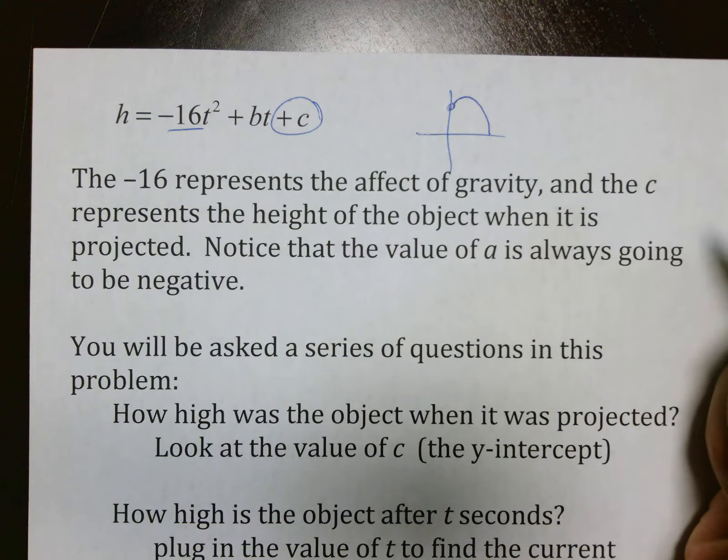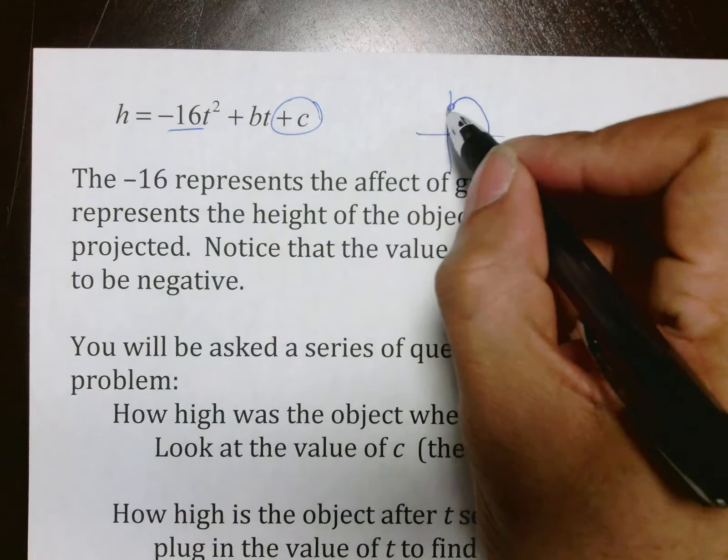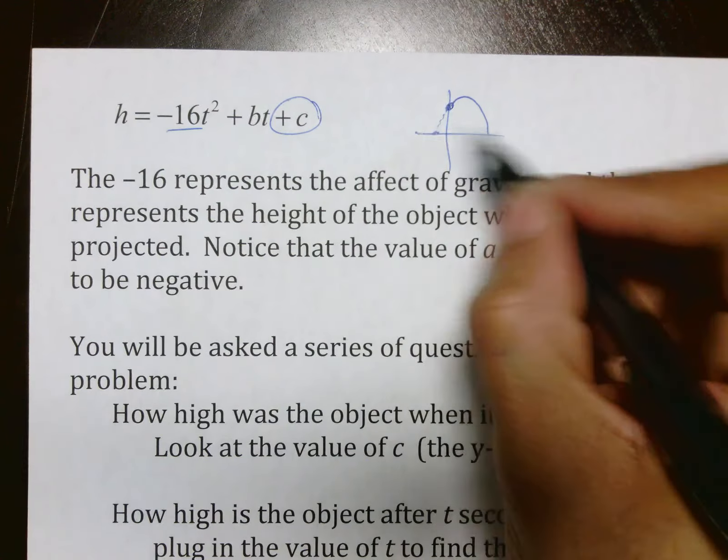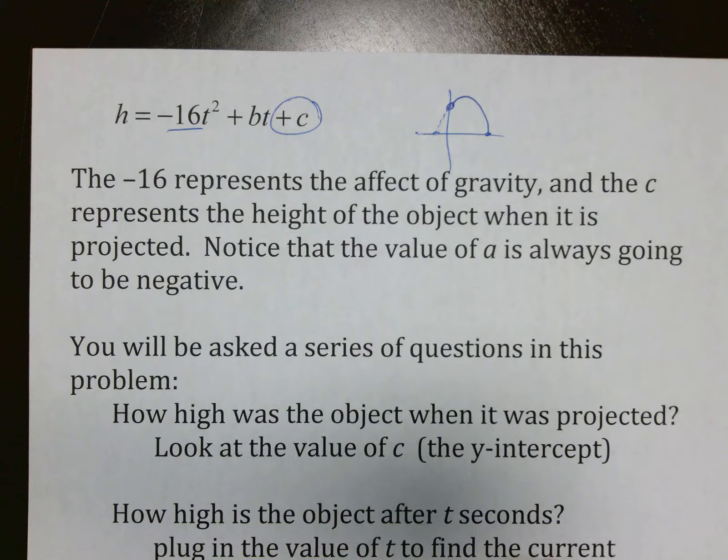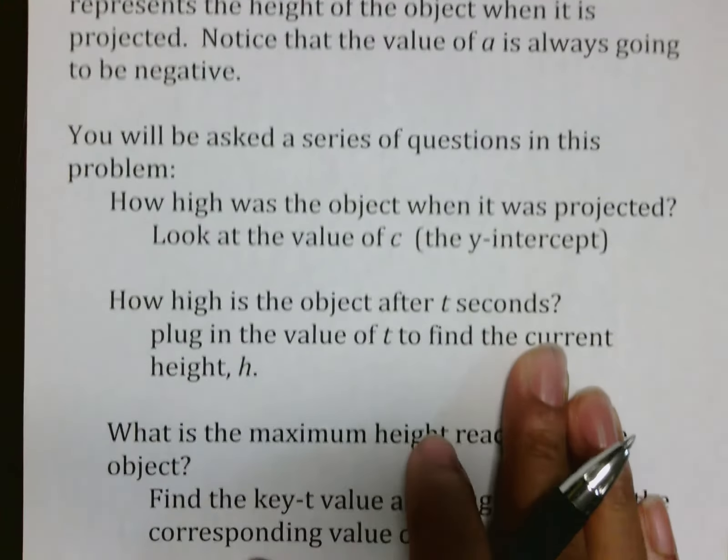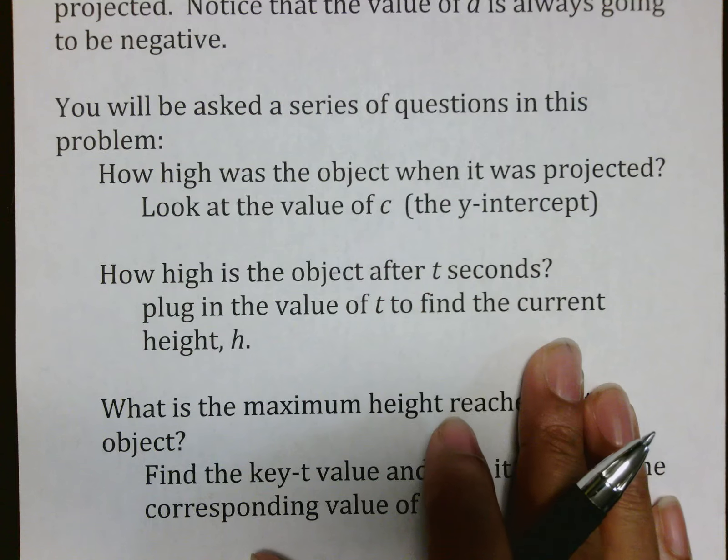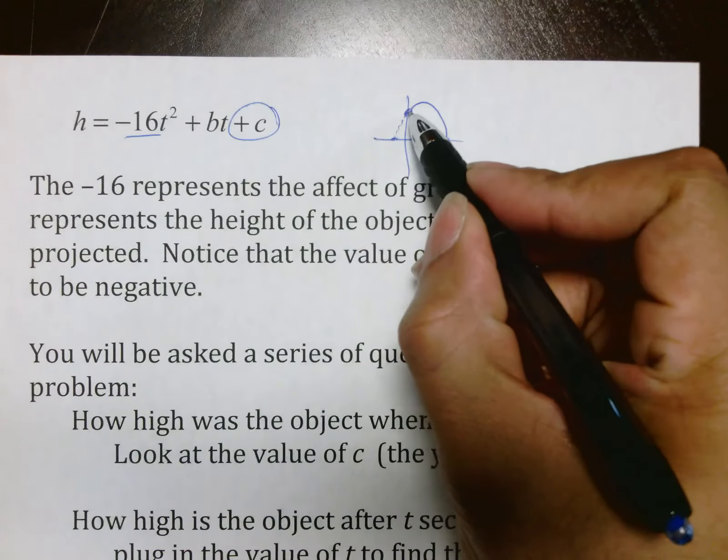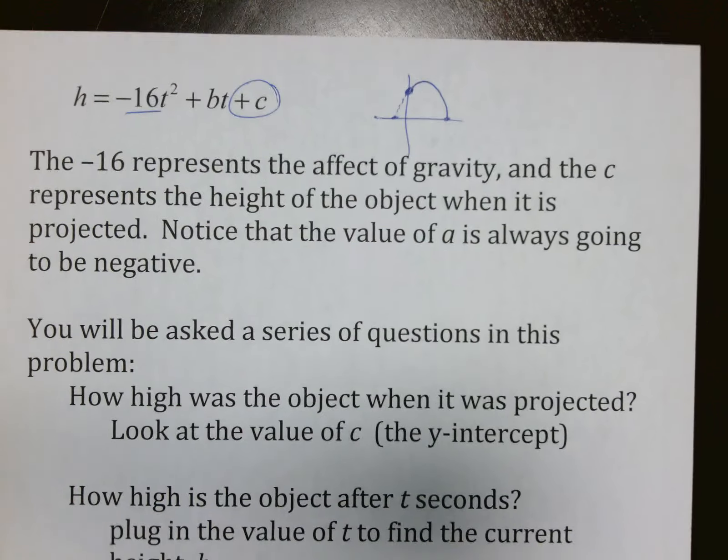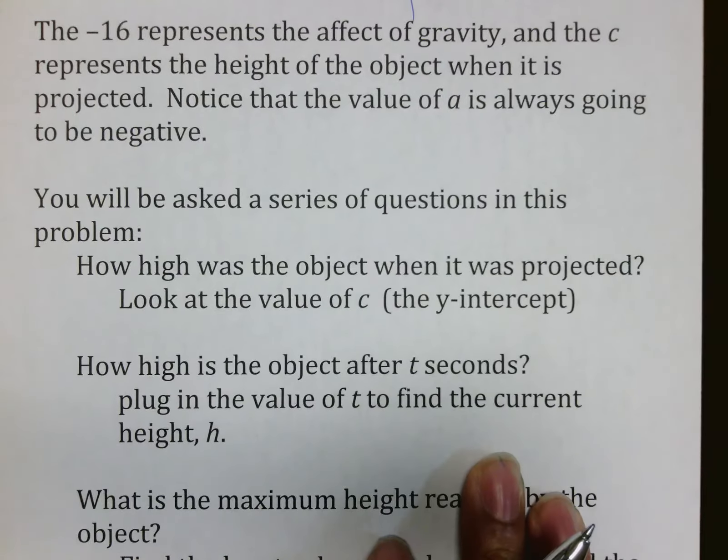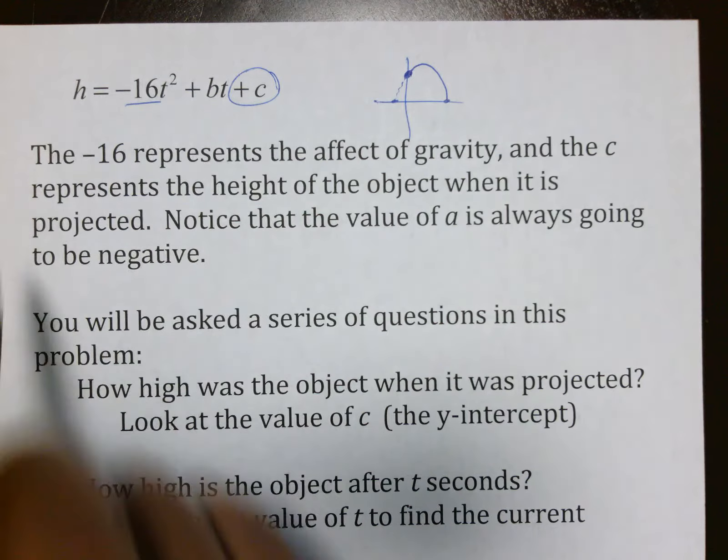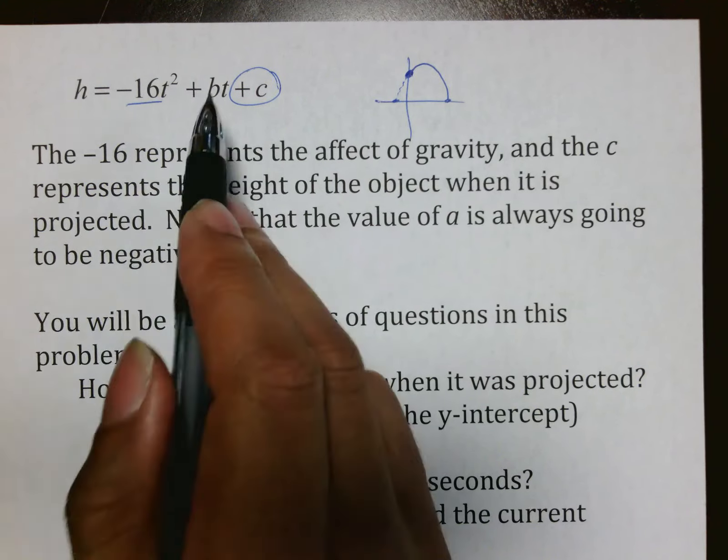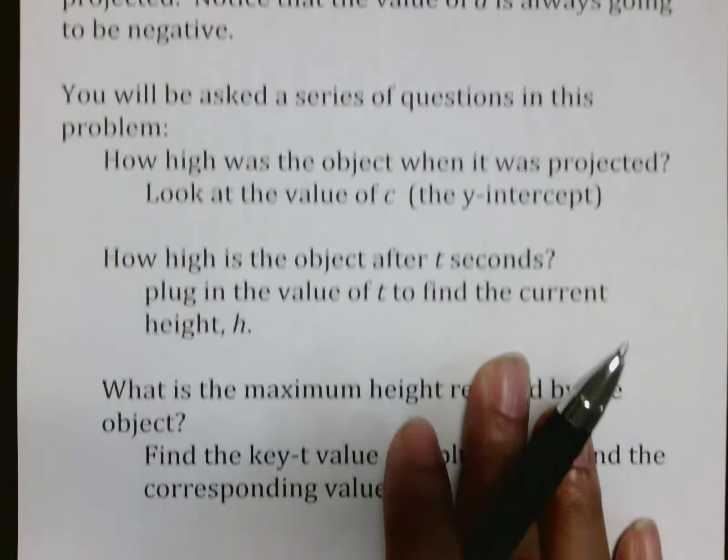The thing you have to keep in mind is that because it's an object like this, there are two intercept points, and one of those is not going to make sense. You are going to be asked a series of questions. One thing it will say is how high was the object when it was projected? The y-intercept represents that. How high is the object after t seconds? Look at the fact that t is what you plug in, and t corresponds with h, which usually represents the height. So if they want to know how high it was after t seconds, simply plug in the t to find the corresponding h, and that will tell you.